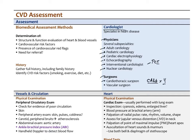Usually they don't perform CABGs for less than three or four blockages — they'll use PCI for fewer blockages. A CABG is a major procedure: the chest is cracked open, the heart is stopped, and the person is put on a heart-lung bypass machine. The healing time is usually weeks or months. By contrast, PCI is often an outpatient procedure with just a small incision in the leg, and recovery time is much shorter.